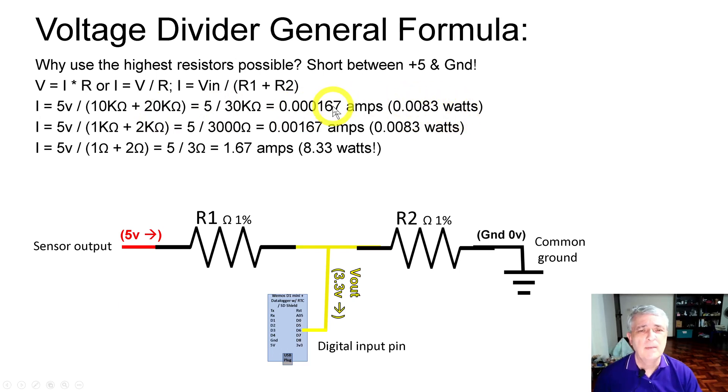Let's raise the resistor values - actually lower them - to 1K and 2K. We got 5 volts divided by 3K, and that ends up at 0.00167 amps, so 10 times more power. This is still a small amount, but it's still 10 times more.